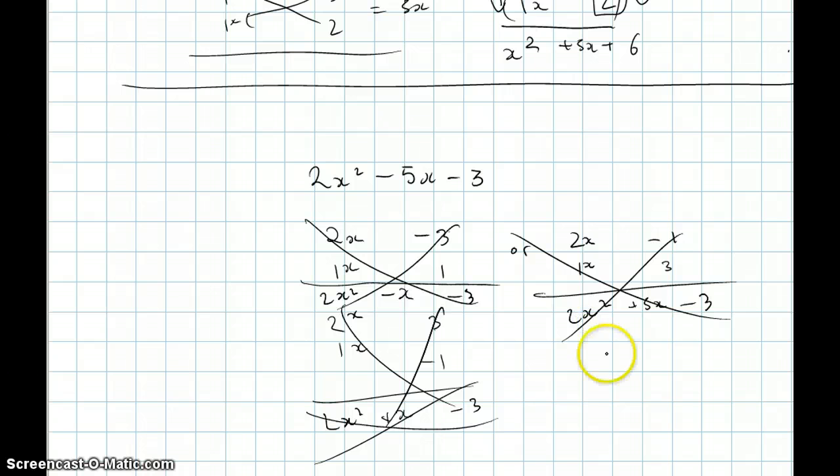And then our last option here, which is probably the one that's correct, would be... Over here, we have 2x squared minus 3. 2x times minus 3 is minus 6 plus x, which is minus 5x. So, we got our answer.